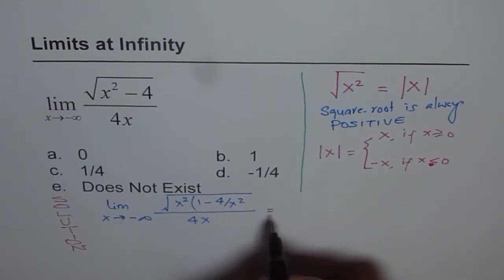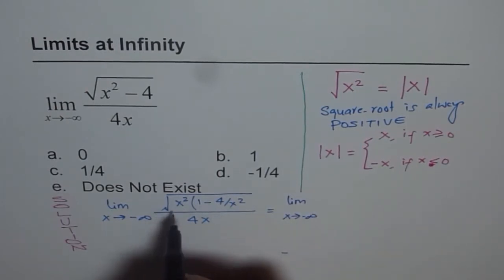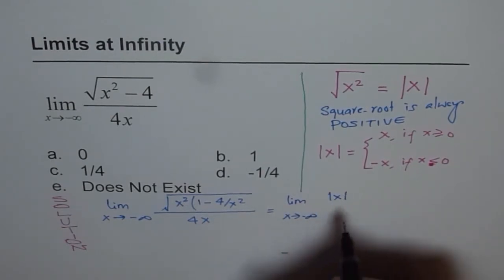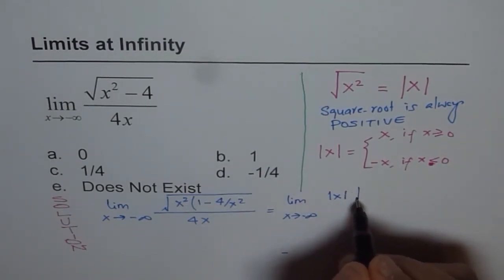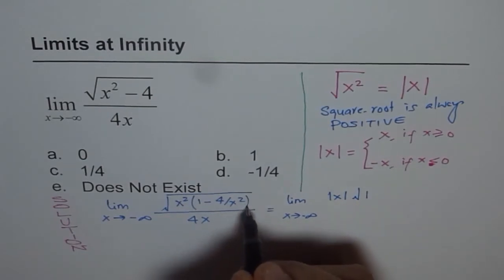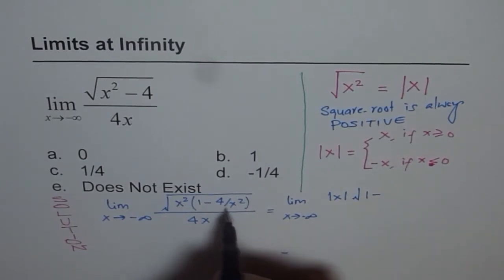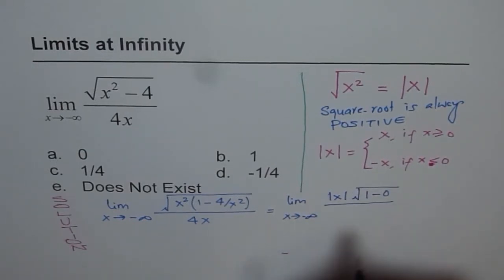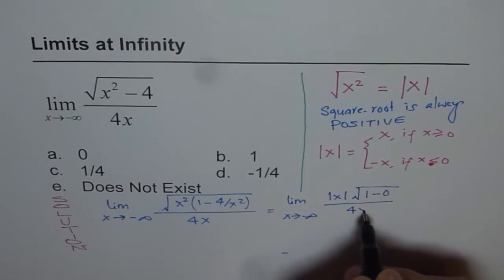So what we get here is limit x approaches minus infinity, and we factor out the square root of x squared, and therefore we get absolute x here. Within the square root we get 1 minus 4 over x squared, and if x is very large it is approaching 0, so we can write 1 minus 0. In the denominator we have 4x.